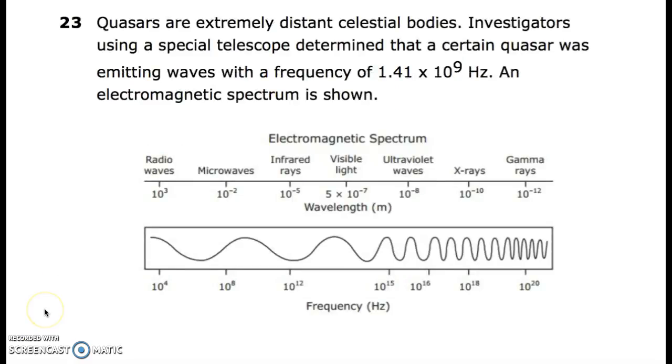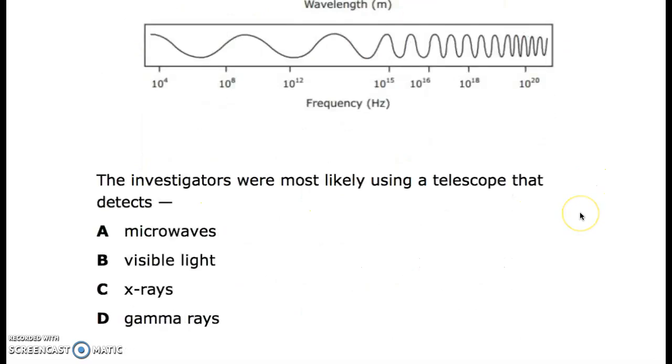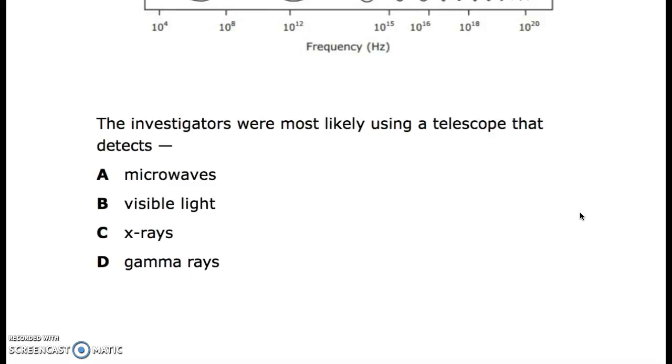23. Quasars are extremely distant celestial bodies. Investigators using a special telescope determined that a certain quasar was emitting waves with a frequency of 1.41 times 10 to the 9 hertz. An electromagnetic spectrum is shown: radio waves, microwaves, infrared rays, visible light, ultraviolet waves, x-rays, and gamma rays. This is the frequency. The investigators were most likely using a telescope that detects microwaves, visible light, x-rays, and gamma rays.